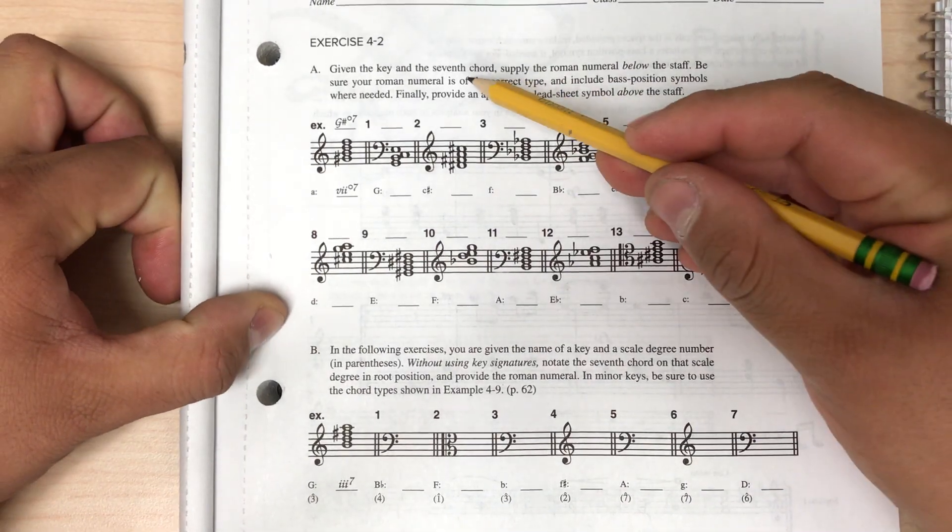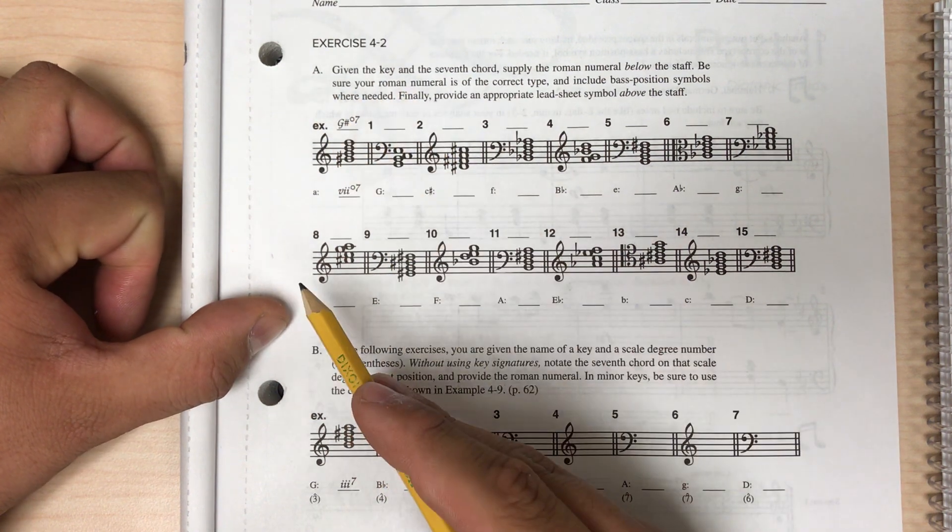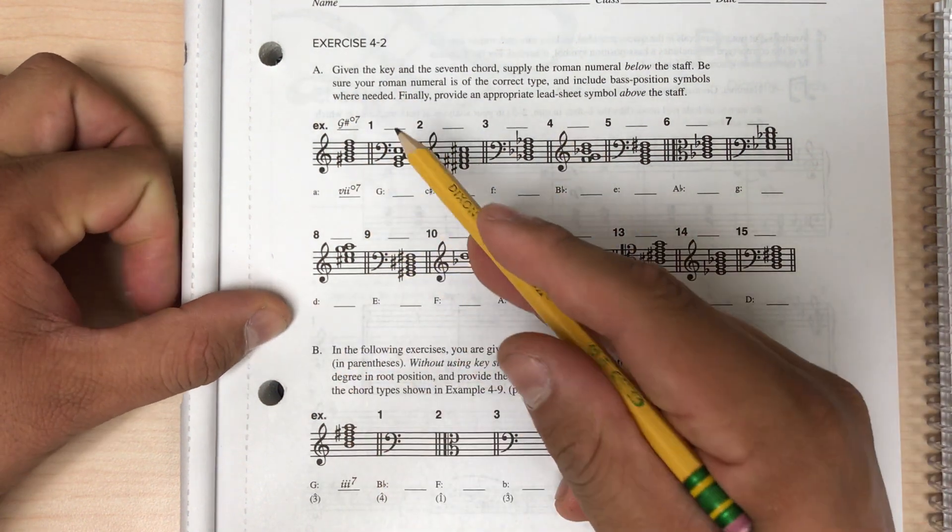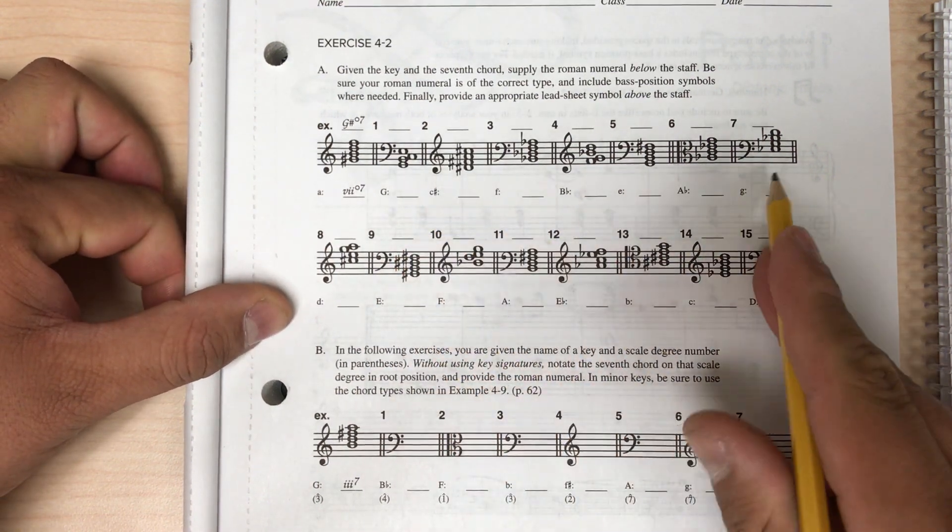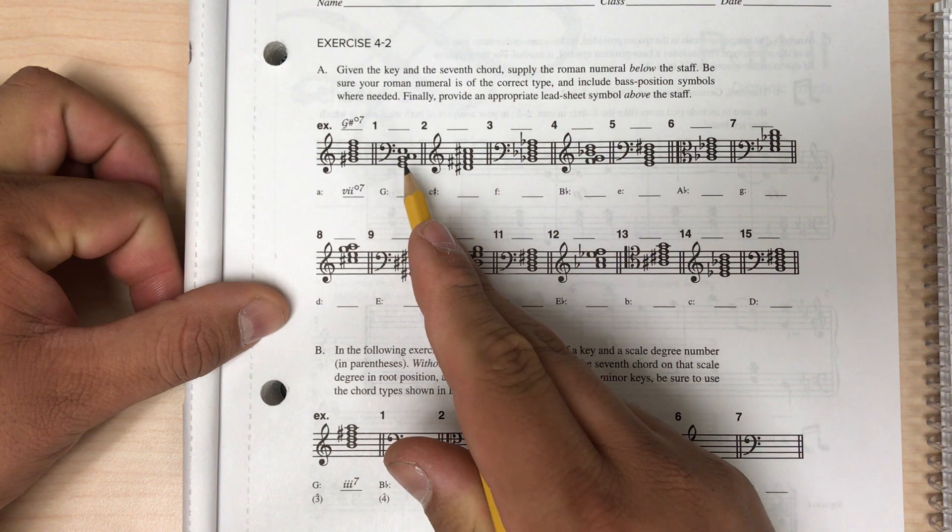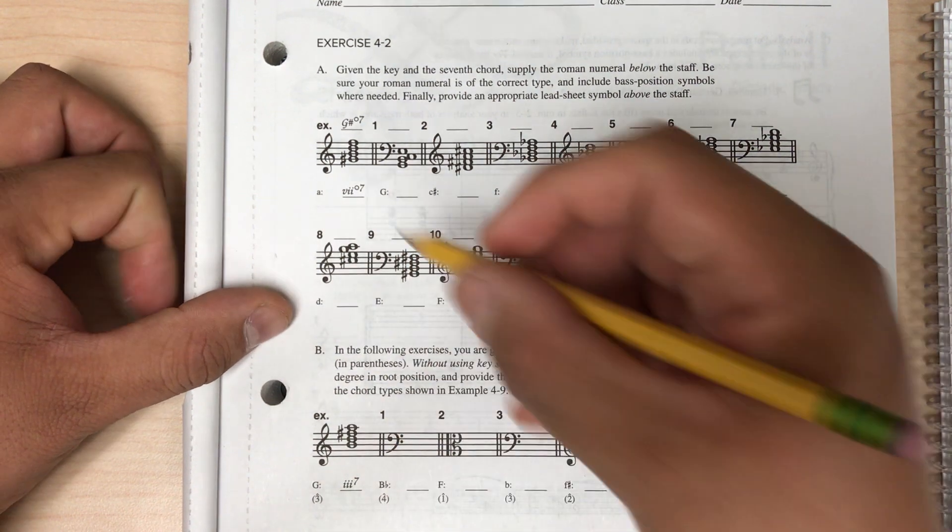This is exercise 4-2 part A. So 4-2 part A is exactly like 4-1 part A, except that this time we're dealing with seventh chords instead of triads. So we'll do the same exact process, we'll just wind up dealing with seventh chords instead of triads.